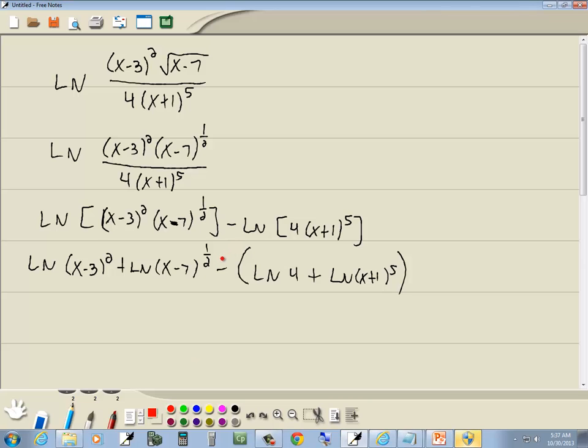Now remember, a negative out in front of your parenthesis is going to flip the sign of everything inside. So in our next step, we've got powers. We know we can put the powers out in front of the logs. So this becomes 2 natural log of x minus 3 plus 1 half ln x minus 7. This negative is going to flip the sign of this natural log of 4, so that becomes minus ln 4. And this sign will flip also, and it has a power. So that 5 goes out in front, and we change the sign out in front, so that becomes a negative 5 natural log of x plus 1.